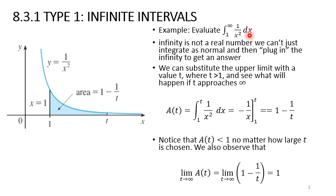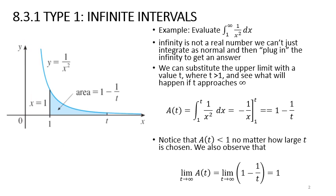When you integrate the function 1 over x squared, you need to substitute the upper limit. Instead of infinity, you put some value t, where t is any number greater than 1, and see what will happen as t approaches infinity. Here is how the graph would look if you have the function y equals 1 over x squared.